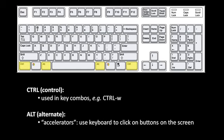You'll also find at the bottom of the keyboard, on both sides of the space bar, a key called ALT, short for Alternate. The ALT key is often used in combination with the CTRL key in key combos, but also the ALT key is used in what are called accelerators. In menu bars of programs, certain letters are underlined — you can hold ALT and hit that letter, and it's the same as clicking on that menu. The CTRL key and the ALT key are basically about keyboard shortcuts — for things we do repeatedly and frequently, it's nice to have keyboard shortcuts rather than moving the mouse and clicking.